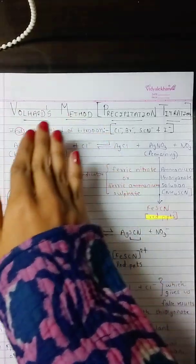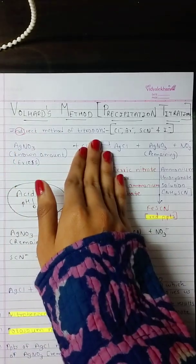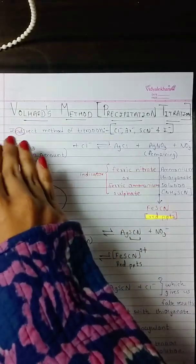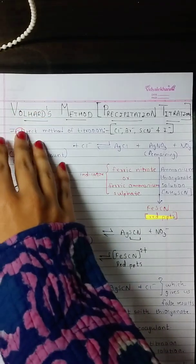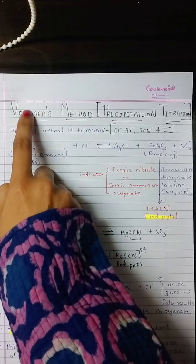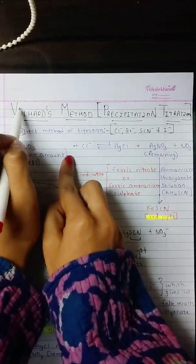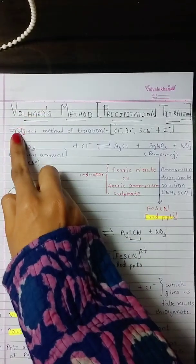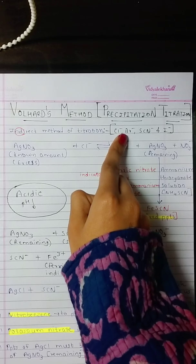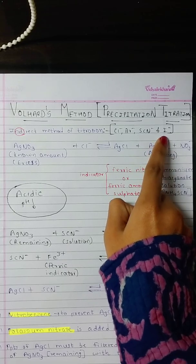Volhard's method is an indirect method of titration. This question is very commonly asked in exams, so note it down: Volhard's method is an indirect method. To remember this, note that in 'Volhard' there is an 'L' and a 'D', which is similar to 'I' and 'D' — indirect. Volhard's method is used to determine the concentration of chloride, bromide, thiocyanates, and iodide ions.